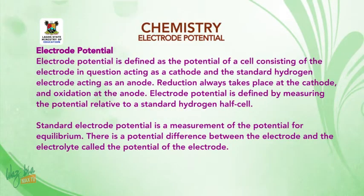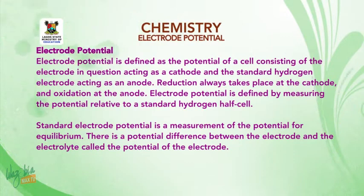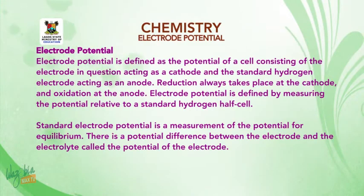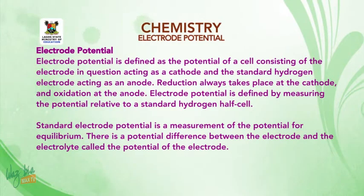Electropotential is defined as the potential of a cell consisting of the electrode in question acting as a cathode and the standard hydrogen electrode acting as the anode. Reduction always takes place at the cathode and oxidation at the anode. Electropotential is defined by measuring the potential relative to a standard hydrogen half cell.